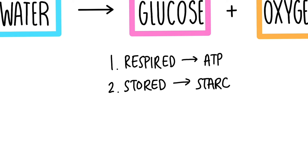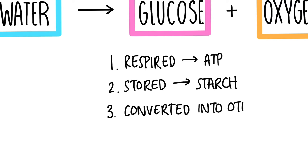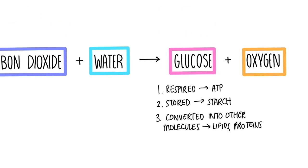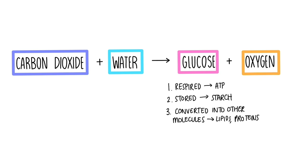Remember, the energy storage compound in humans is glycogen. The third thing that could happen is that it could be converted into other molecules — so things like lipids, proteins, nucleic acids — all the things that the plant cell needs. The second product is oxygen, and that's going to be released out of the plant through the stomata.